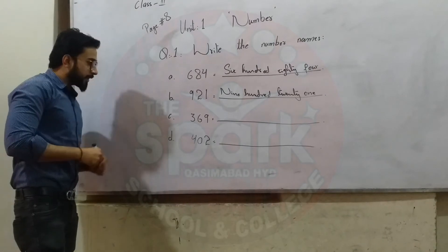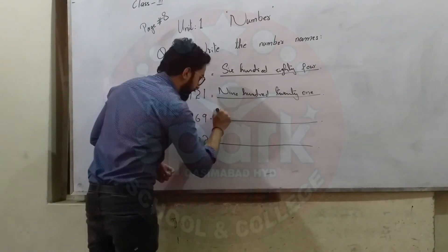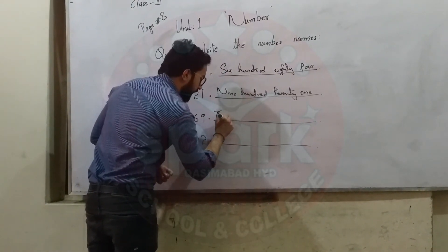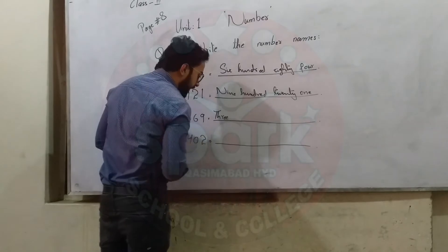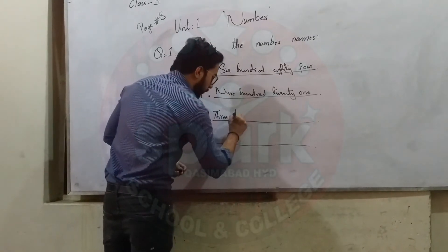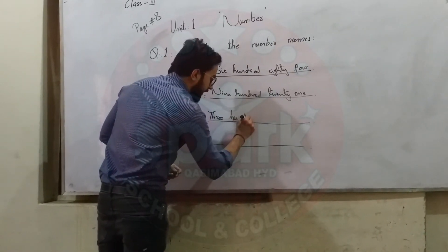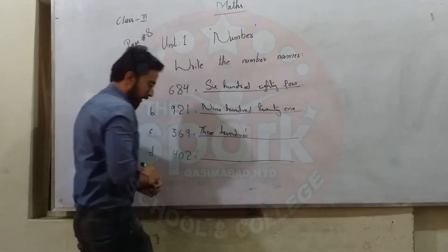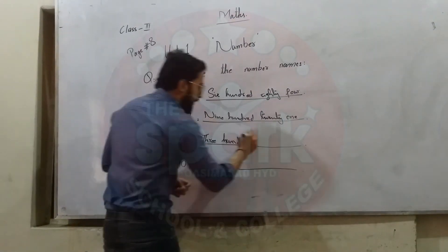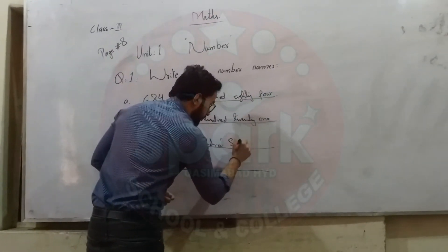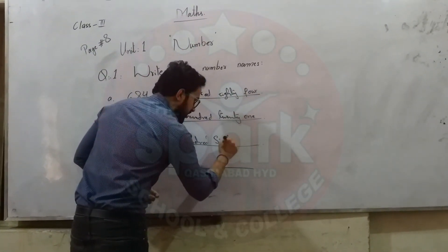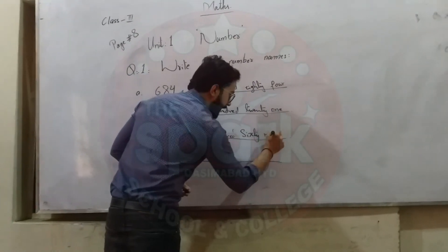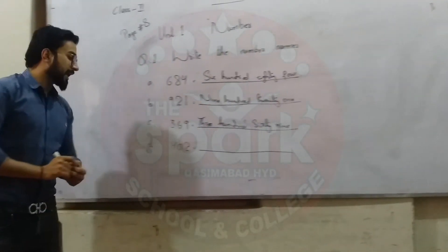Now the second one is 369. T, H, R, E, E: Three. H, U, N, D, R, E, D: Hundred. S, I, X, T, Y: Sixty. N, I, N, E: Nine.